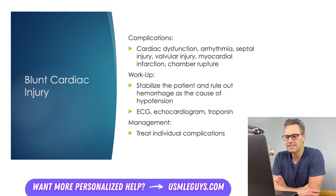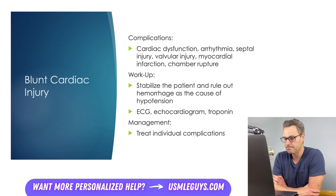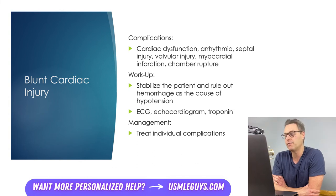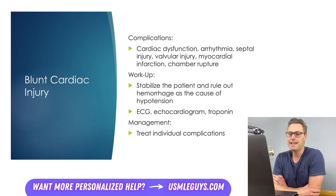Management for blunt cardiac injury really depends on the specific complications that arise. Generally, all these pathologies are going to be managed in the same manner as non-traumatic causes, with the exception of an MI, where thrombolytics are typically avoided due to the risk of catastrophic hemorrhage. Instead, patients undergo catheterization with stenting or coronary artery bypass surgery. Arrhythmias are managed depending on the specific rhythm present. Septal and valvular injury that leads to heart failure will be treated with surgical correction, and chamber rupture would be treated with repair if we get to the patient before they die.